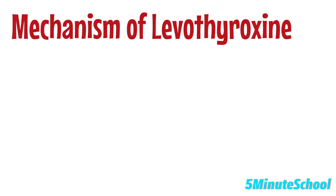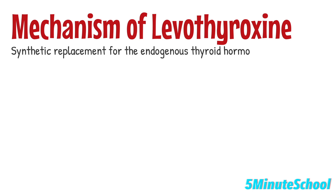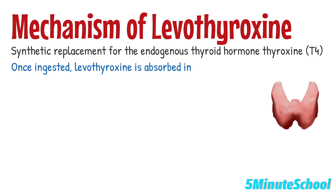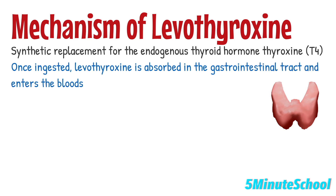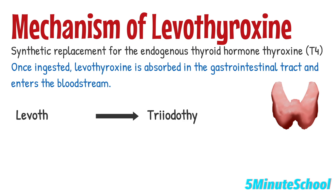In terms of mechanism of action, levothyroxine works by acting as a synthetic replacement for the endogenous thyroid hormone thyroxine T4. Once ingested, levothyroxine is absorbed into the gastrointestinal tract and enters the bloodstream. It's then transported to various tissues and organs throughout the body. Within the target cells, levothyroxine is converted into triiodothyronine T3, which is the active form of the thyroid hormone. This conversion occurs mainly in the liver and other peripheral tissues.